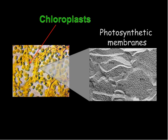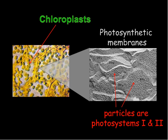These chlorophyll molecules are organized into molecular complexes called photosystems, which are visible as particles embedded in the photosynthetic membranes, as seen in this electron microscope image. Plants have two types of photosystems called photosystem 1 and photosystem 2.